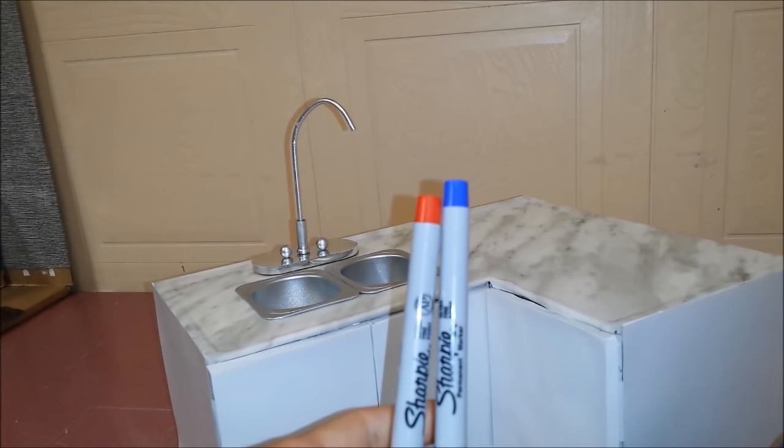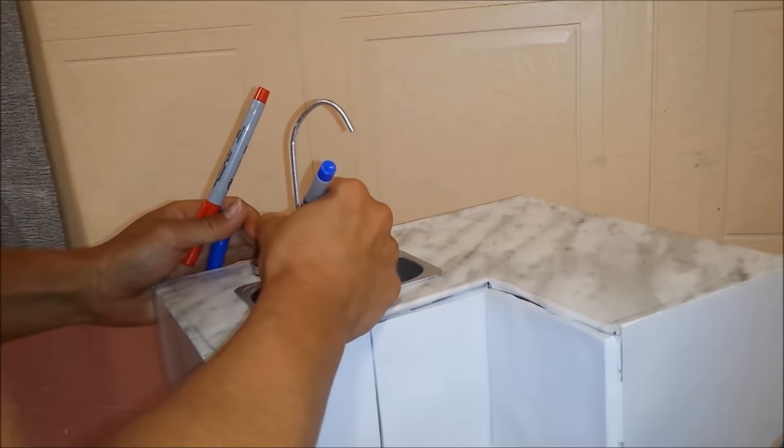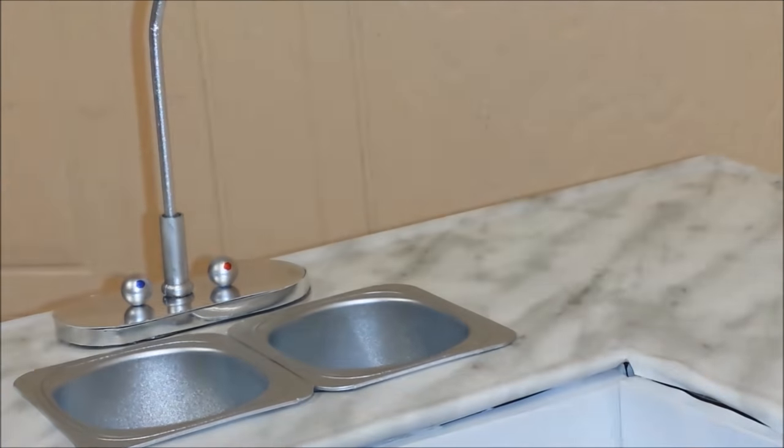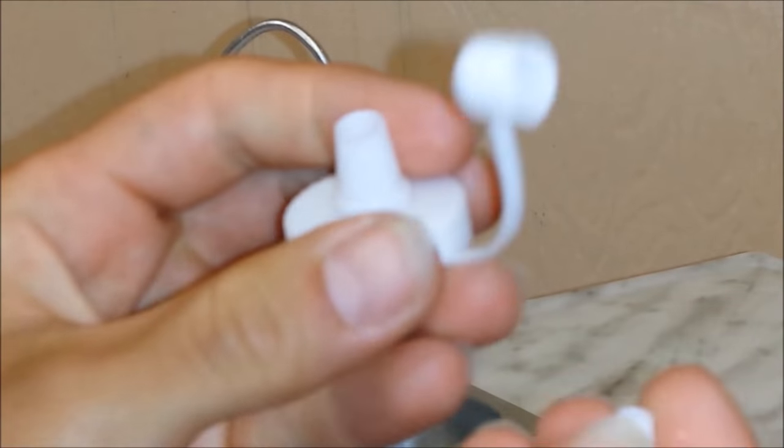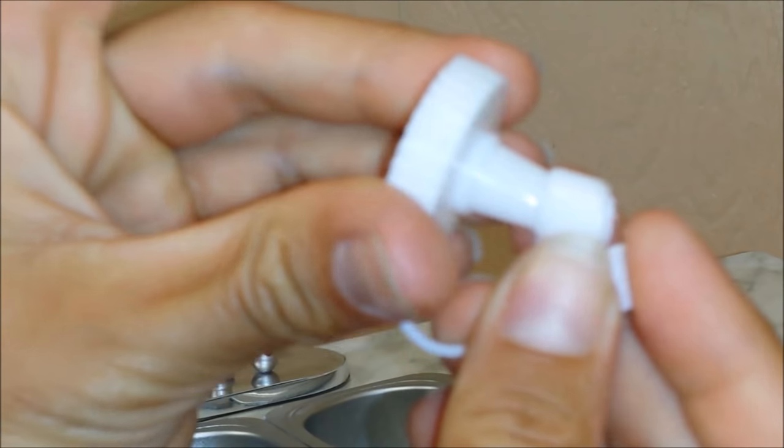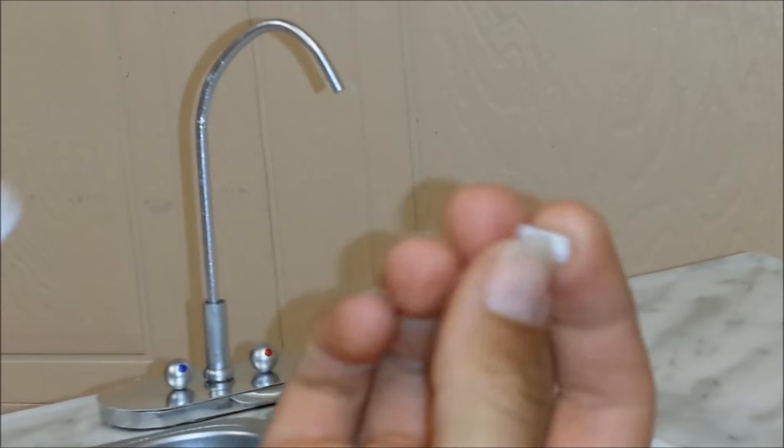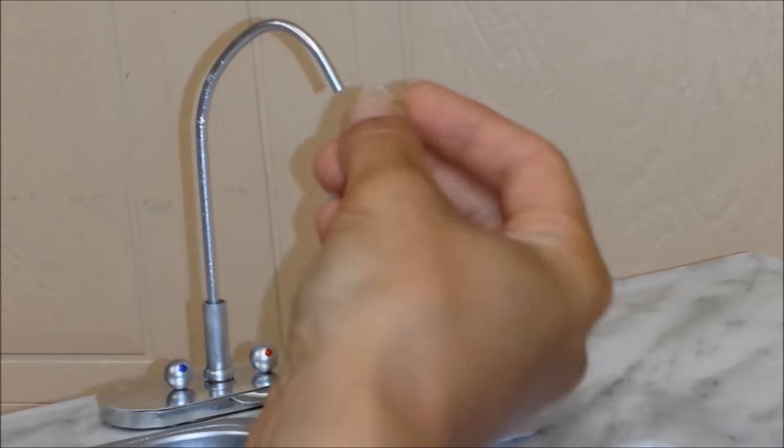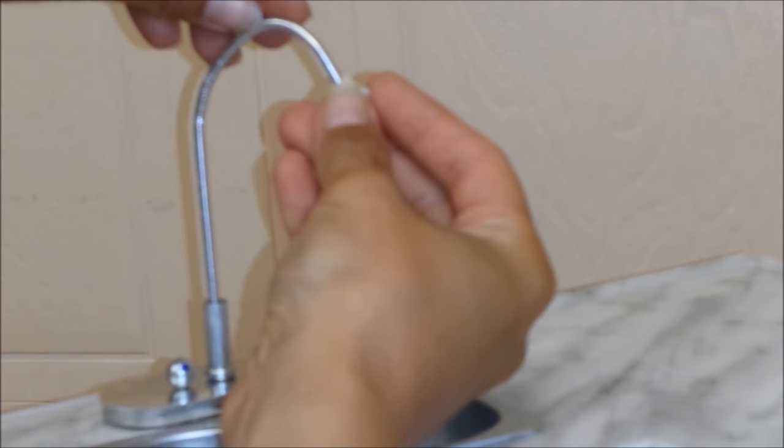Blue and red sharpie. This here I cut off just the tip of a ketchup bottle or a mustard bottle. I'm going to use that, paint it silver, and I'm going to put it right in here.